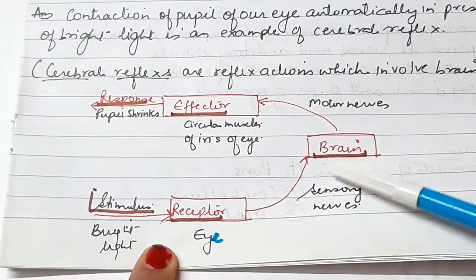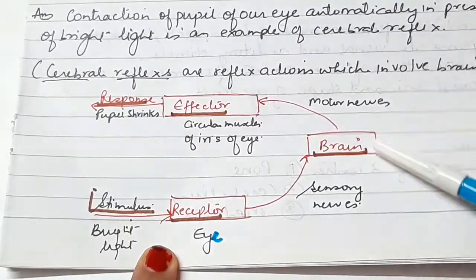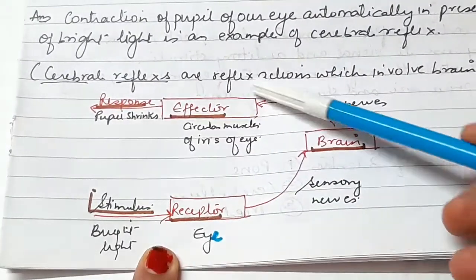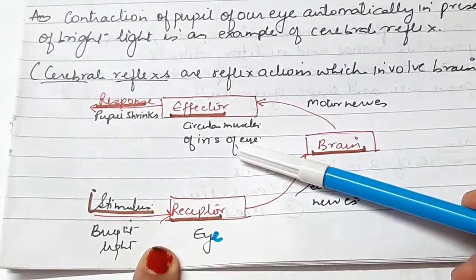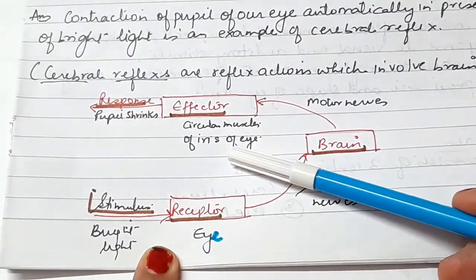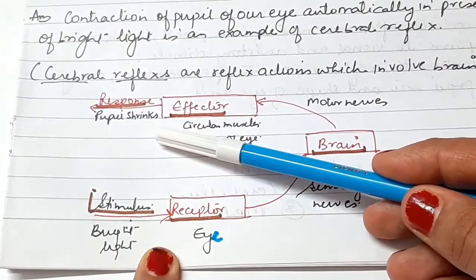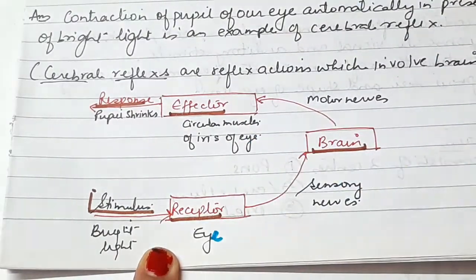Through the sensory nerves, it reaches our brain. From the brain through motor nerves, it reaches the effector. The effector in this case is the iris of the eye. And the response is that the pupil got shrinked. I hope this is clear to you - reflex arc and reflex action.